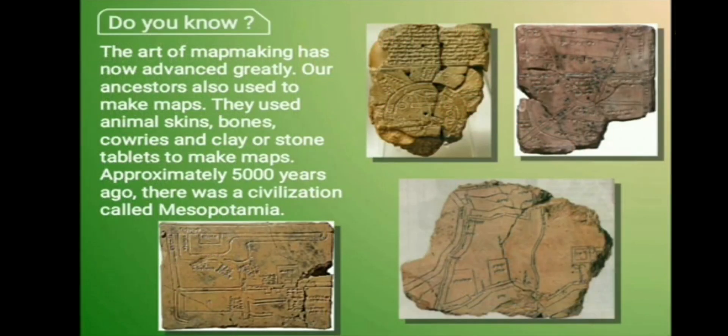Now in today's video we are going to learn about the map. Before that, do you know the art of map making has now advanced greatly? Our ancestors also used to make maps. They used animal skins, bones, cowries, and clay or stone tablets to make maps. Approximately 5000 years ago, there was a civilization called Mesopotamia.